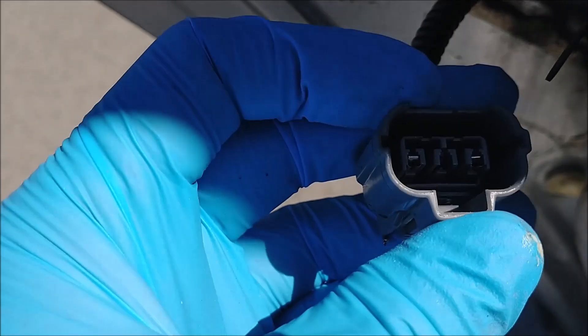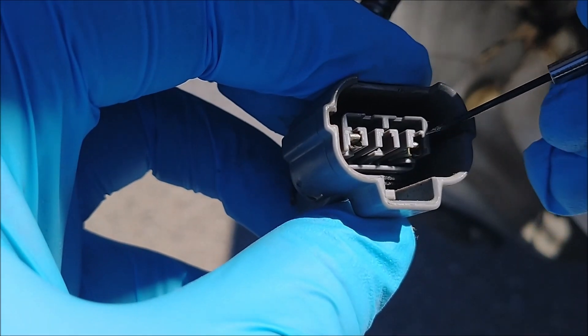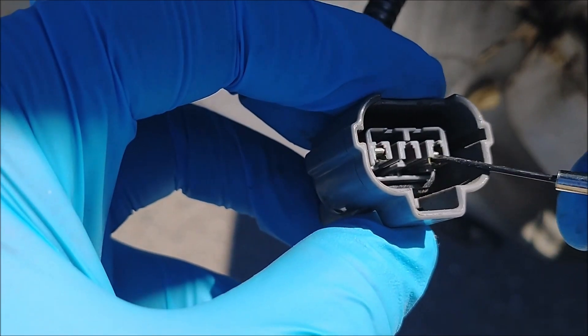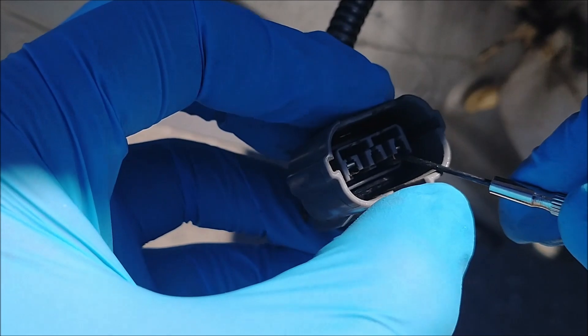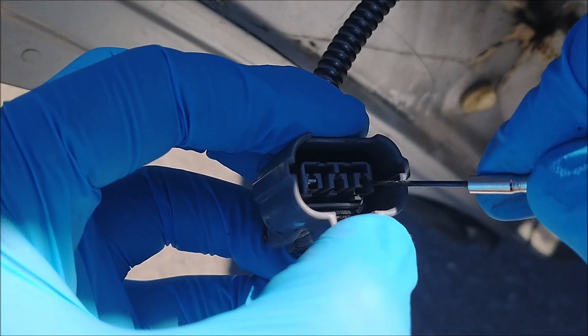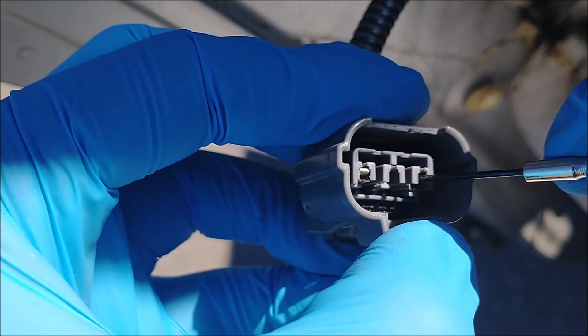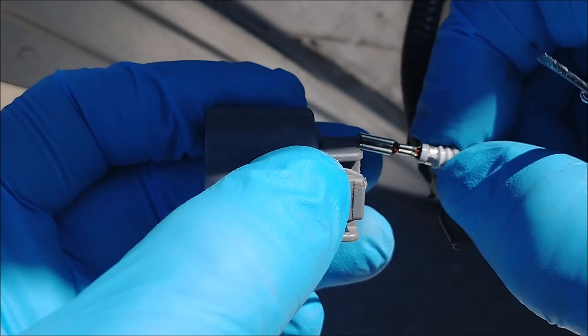Next get a flathead screwdriver like you use for eyeglasses, the small one. Put the screwdriver in between the metal pin and the plastic tab, push it in between and then push the metal pin outward. At the same time use the screwdriver to push the metal pin out in the front and also pull it from the rear like that.